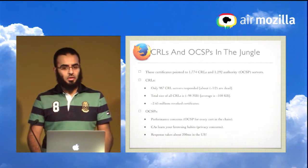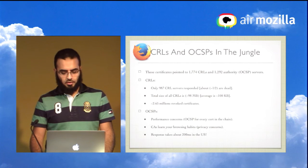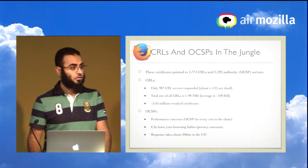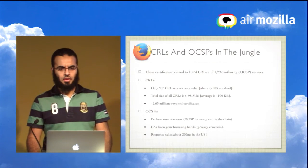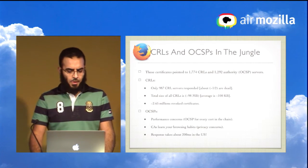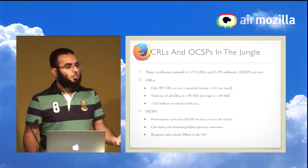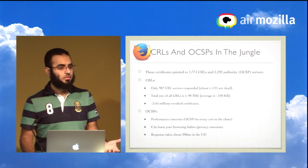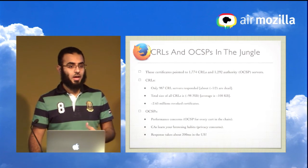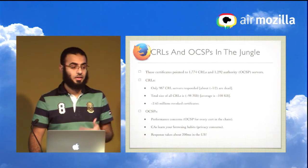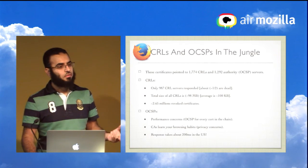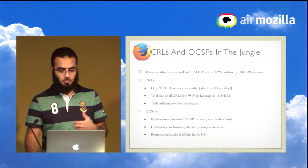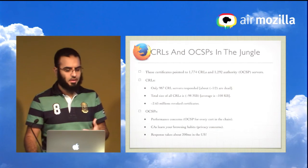Looking at what's being revoked across the Alexa top 1 million sites, there were about 1,700 CRL servers and about 1,300 OCSP servers. When I pinged these servers to see which were live, only about half of the CRL servers actually responded — meaning roughly half of the CRL-based revocation checks were failing to return any response.